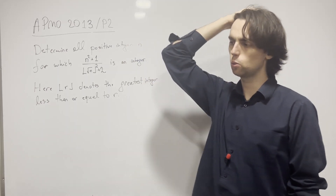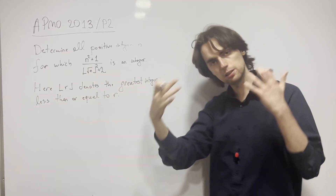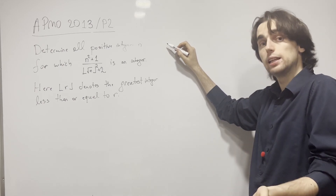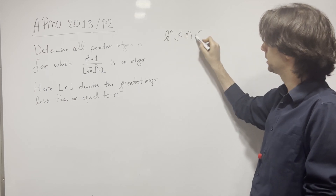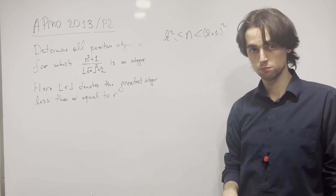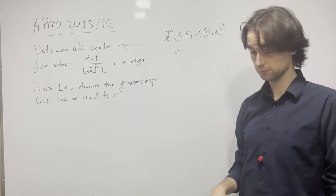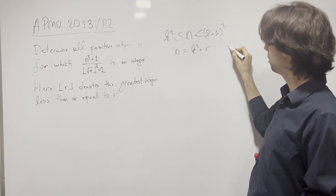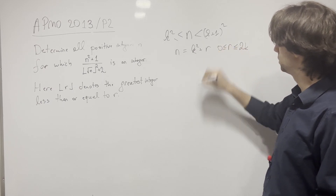We care about which two squares n sits between. We care about the integer k such that n is between k² and (k+1)². This means we can represent n of the form k² + r, where r is between 0 and 2k inclusive.